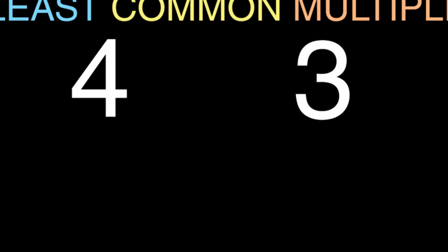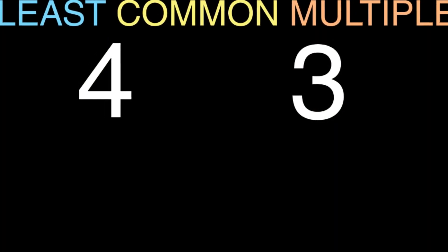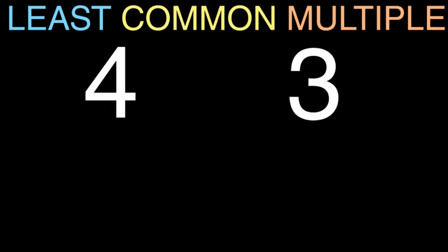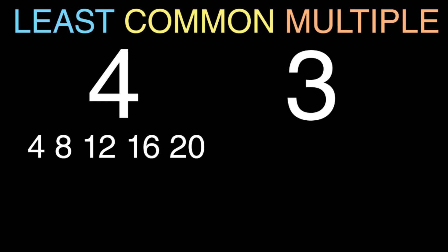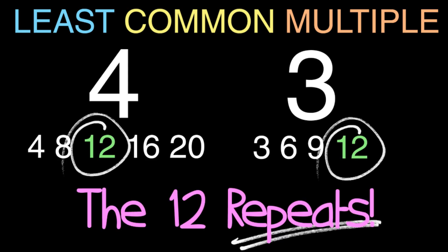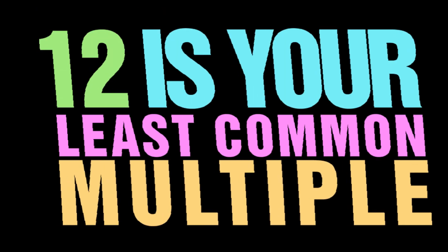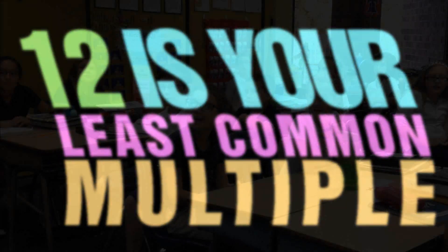Open up your books, write down what you see. First the four and then the three. Count them out and write them all down. Multiples of four: four, eight, twelve, and sixteen. We go one more, we get twenty. Then three: three, six, nine, and twelve. We should see it repeats — and boys and girls, twelve would be our LCM.